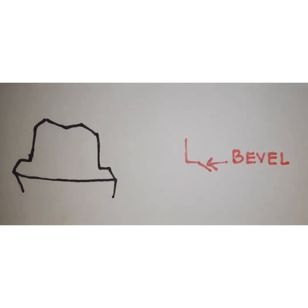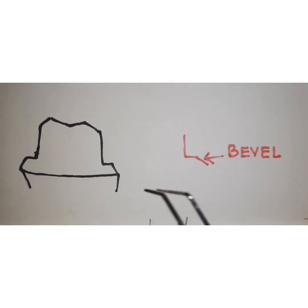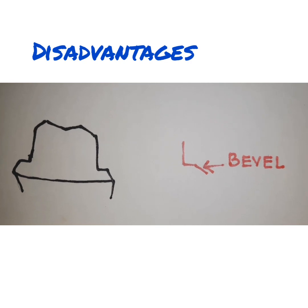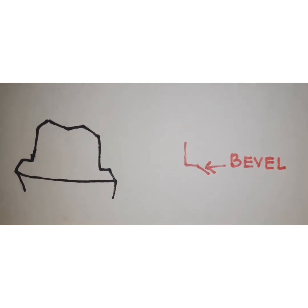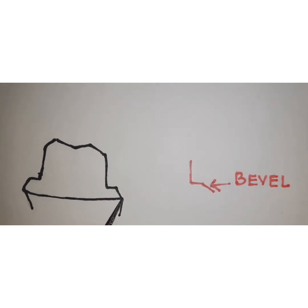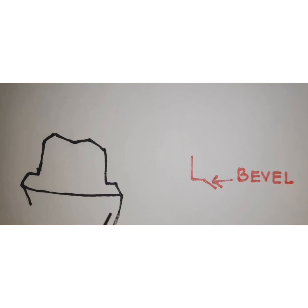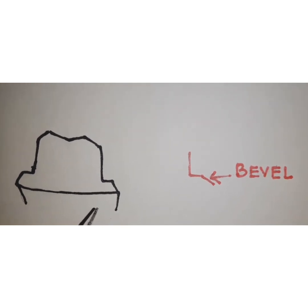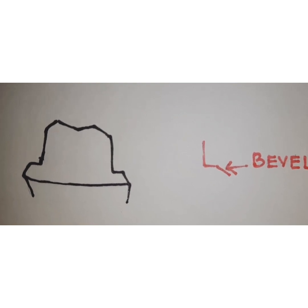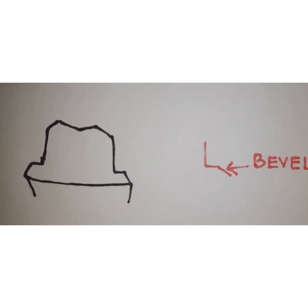Shoulder with bevel also provides adequate bulk of metal to resist functional distortion, since the bevel creates extra space increasing the metal bulk and strength. The drawbacks are that it is a less conservative preparation because first a shoulder is prepared and then further reduced for the bevel. The preparation extends more apically into the gingival sulcus, which is not good for periodontal health. It is also possible to create a sharp metal edge at the margin, which may irritate gingival tissues.